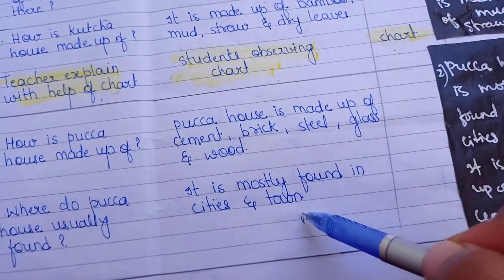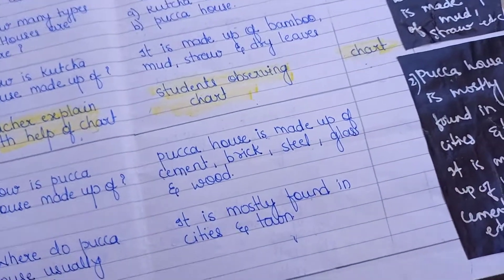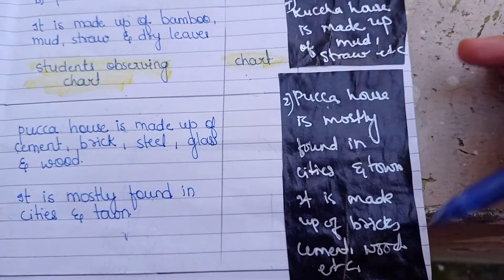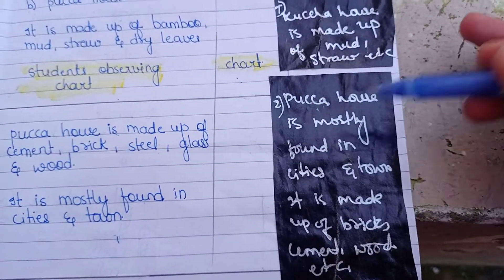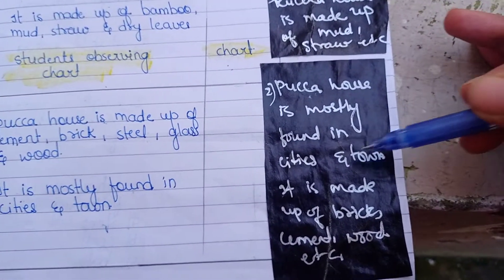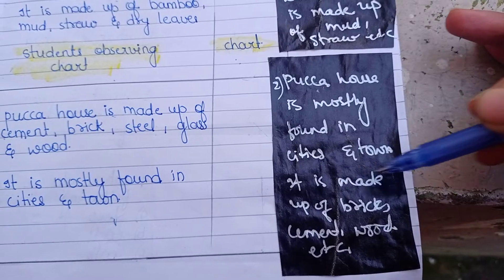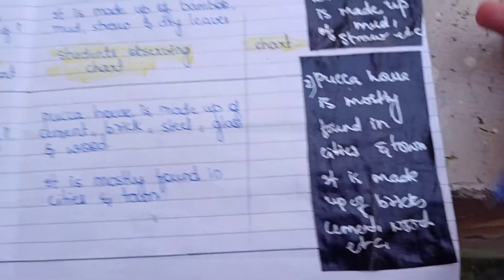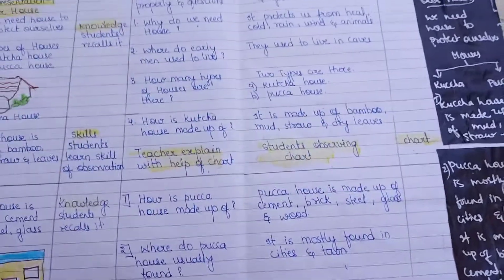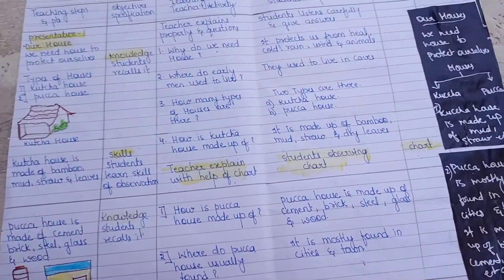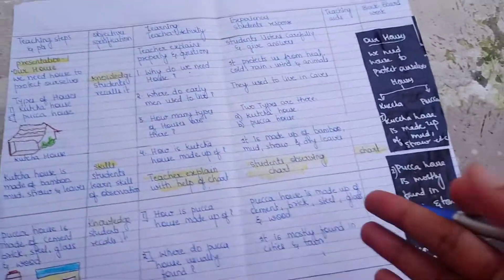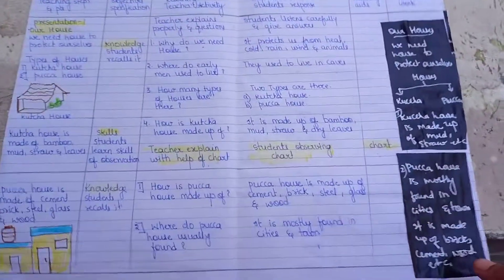These are the answers we expect from students. For the blackboard work: 'Pakka house is mostly found in cities and towns. It is made up of brick, cement, wood, etc.' We have to write like this on the blackboard. This is the overall look for this section.